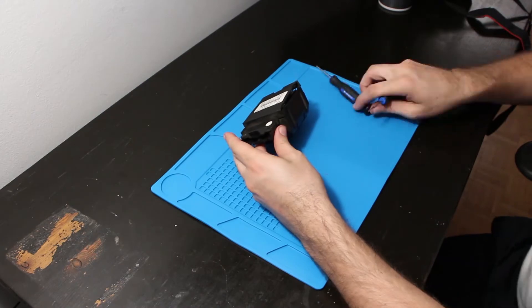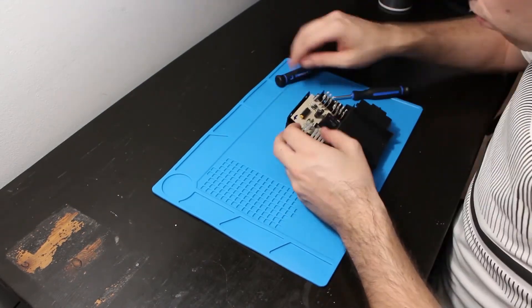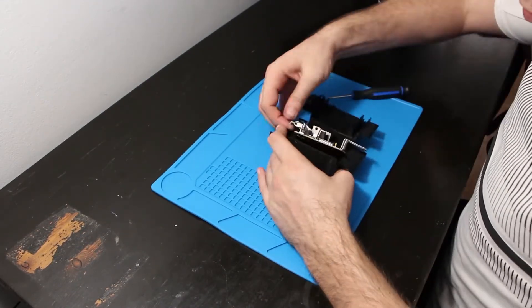Here you see the little module. Opening it up is easy. Just gently pry the plastic cover open and pop the circuit board out.